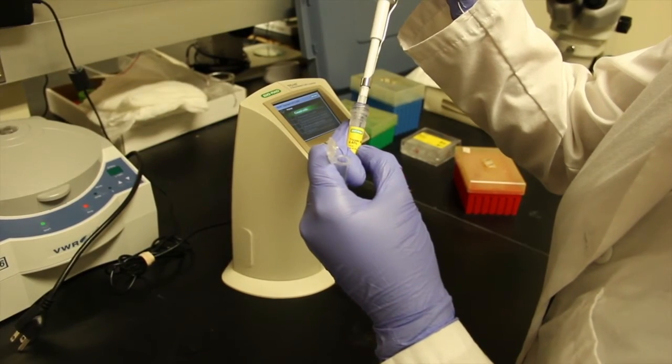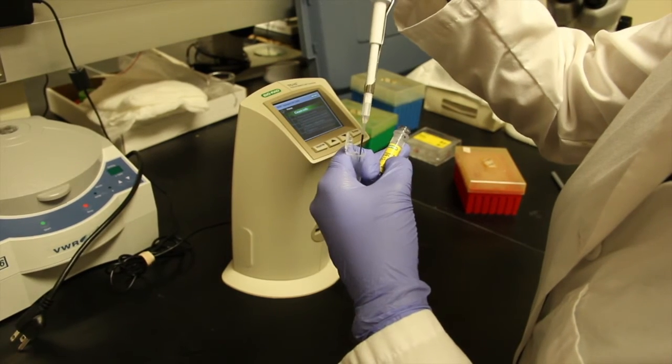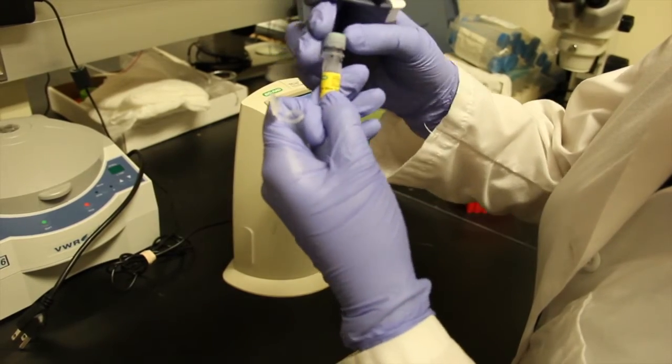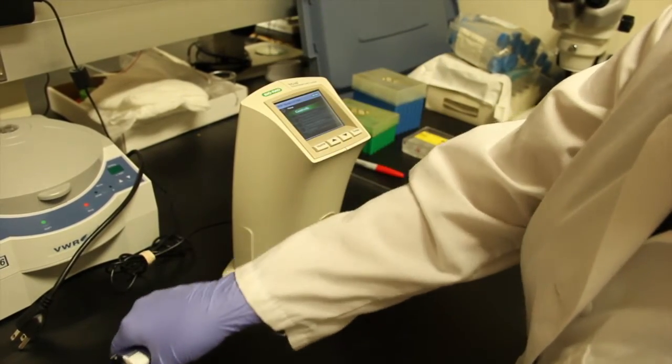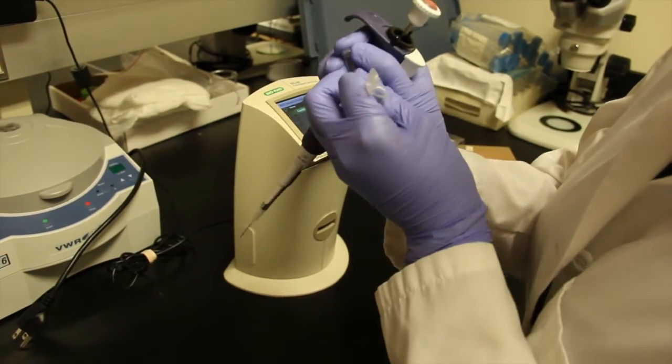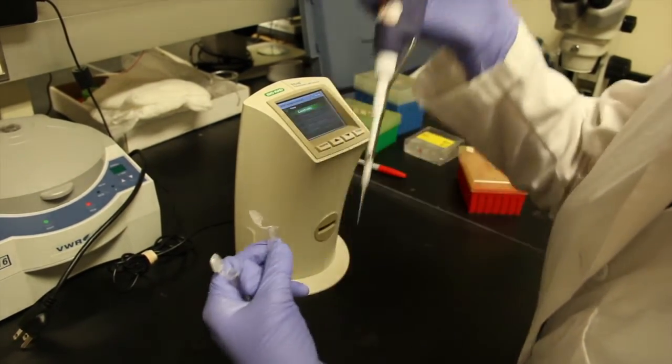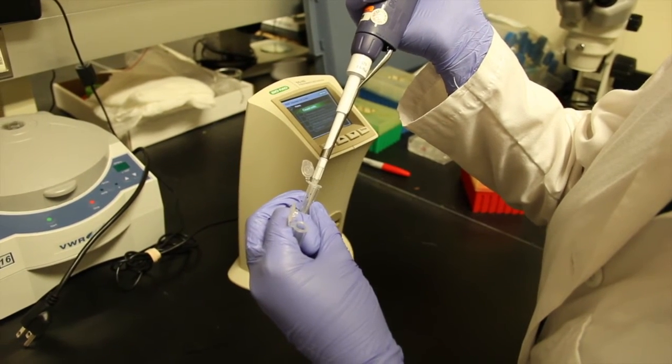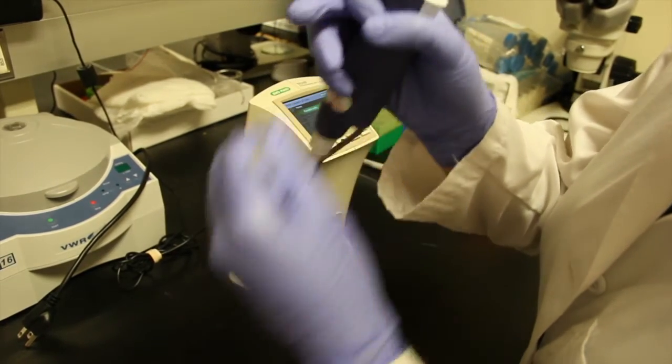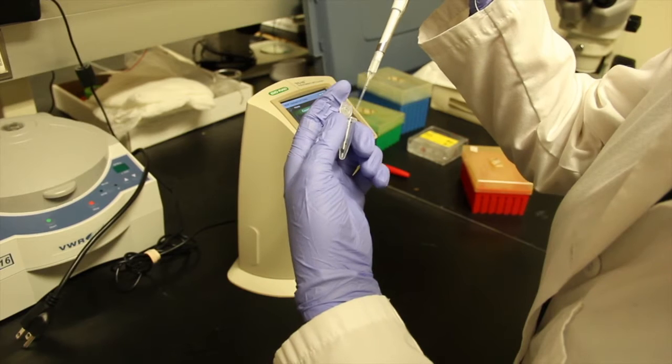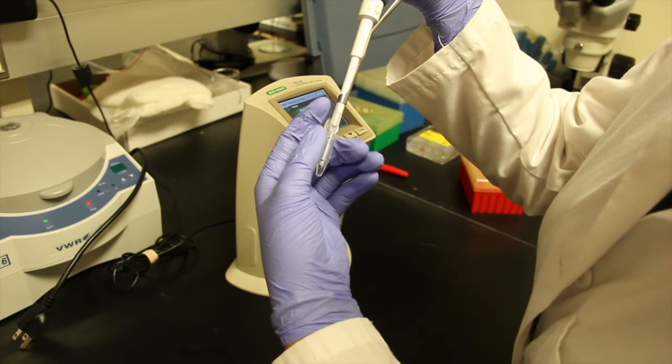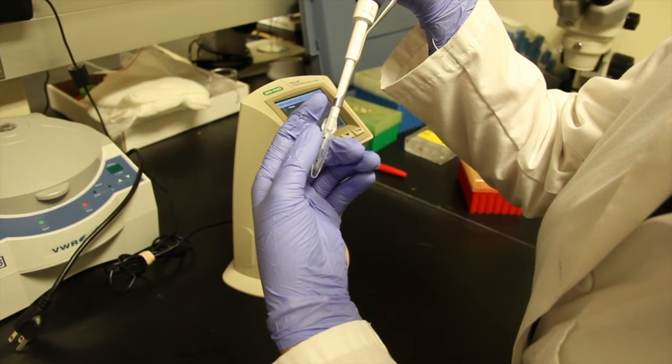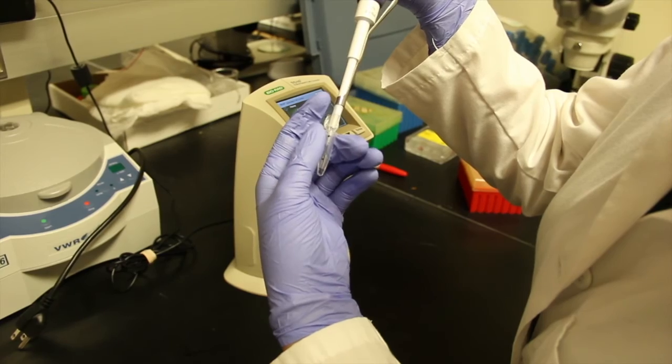Perform a cell count by pipetting 10 microliters of Trypan Blue dye solution into a clean microcentrifuge tube. Using the same tip, remove a 10 microliters sample of your cells. Pipette the mixture up and down 10 times. This ensures even mixing of the solution so you'll get an accurate cell count.